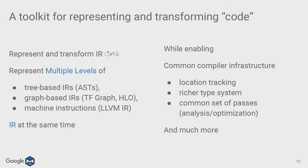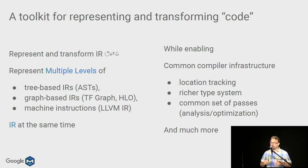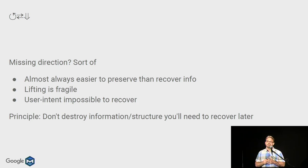You can think of MLIR as a toolkit for representing and transforming code. It enables you to represent and transform IR within the same level of abstraction, across different IR representations of the same level, as well as lowering down to code. MLIR allows representing multiple levels of IR at the same time — tree-based IRs such as ASTs, graph-based IRs, or machine instructions — while enabling a common compiler infrastructure, location tracking, rich type system, common passes for analysis and optimization, common abstractions and interfaces, and a data flow framework.